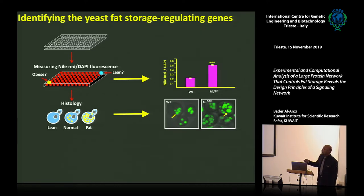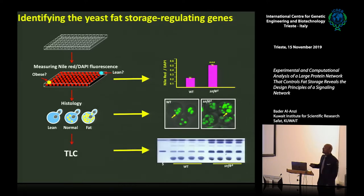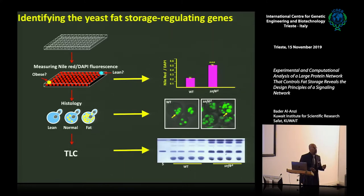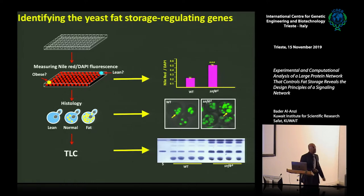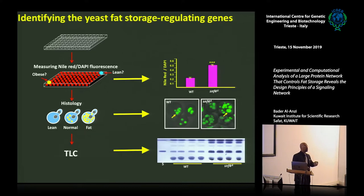We further confirmed that those mutants are obese by examining them visually using a different fluorescent dye, Bodipy. You can see the same mutant here — normal yeast cells have five to seven fat droplets — but the mutant SNF4 has many large, big lipid droplets. The final stage of confirmation is biochemical, using thin layer chromatography. We take the mutant, crush it, extract the fat, and run it on TLC plates. The mutant in four replicates shows a very large fat band compared to normal, confirmed as fat by mass spectrometry.